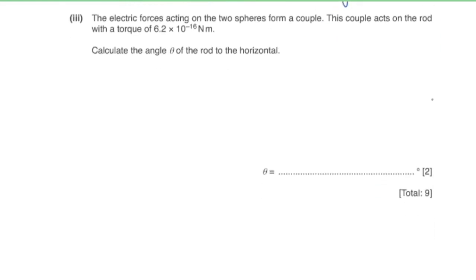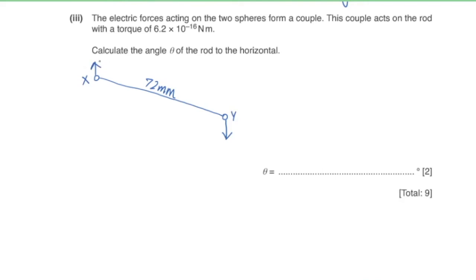Part three: the electric forces on the two spheres form a couple with a torque of 6.2 × 10⁻¹⁶ N·m. Calculate angle θ. Torque = force × perpendicular distance, so 6.2 × 10⁻¹⁶ = 2.4 × 10⁻¹⁴ × perpendicular distance, giving a perpendicular distance of 0.02583 meters.